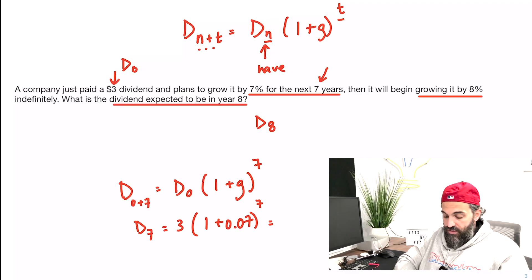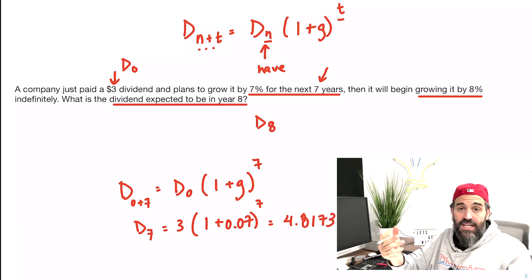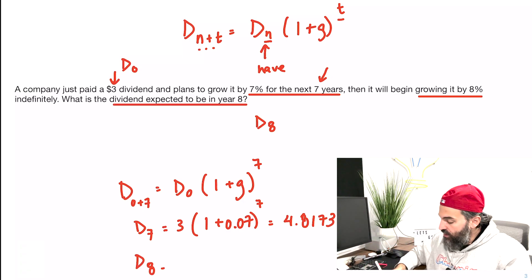So 3 times 1.07 to the 7 is 4.8173. But I want D8. Well, I know from D7 to D8, it's going to grow by 8%. So if I want D8...